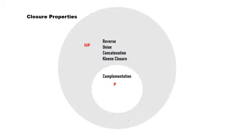Now let's move on to closure properties. NP is closed under reverse, union, concatenation, and Kleene closure. Since P is a subclass of NP, P is also closed under reverse, union, concatenation, and Kleene closure. P is additionally closed under complementation. As for NP and complementation, this is again an open problem — we cannot really say that NP is closed under complementation, but we also cannot say it is not. So we actually don't know whether NP is covered by complementation.